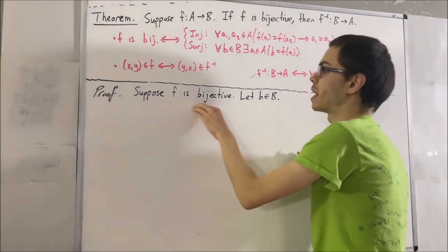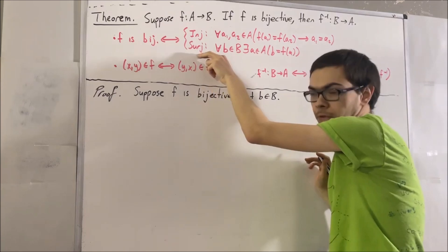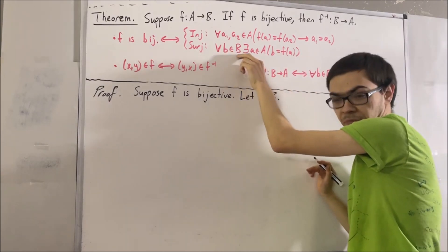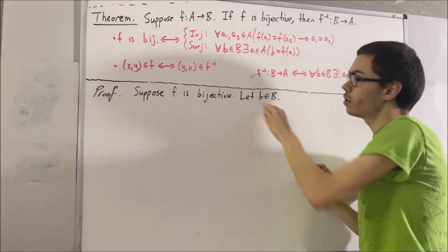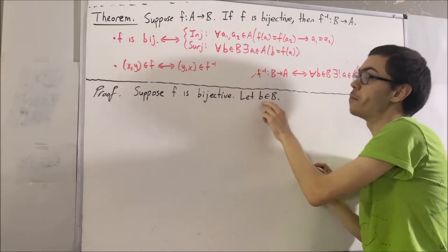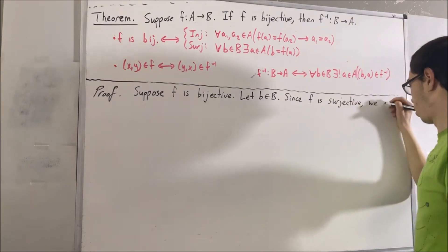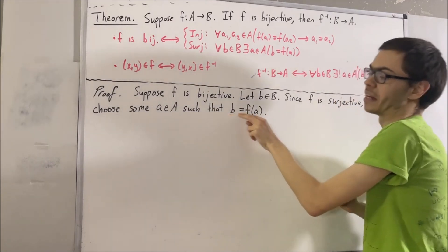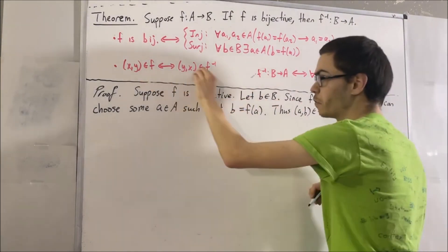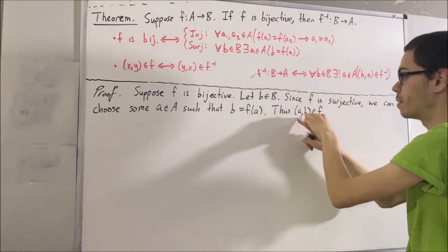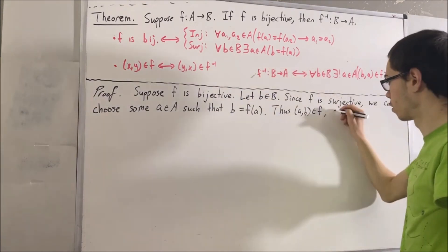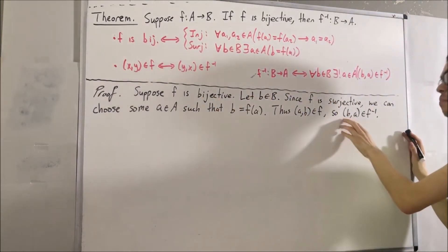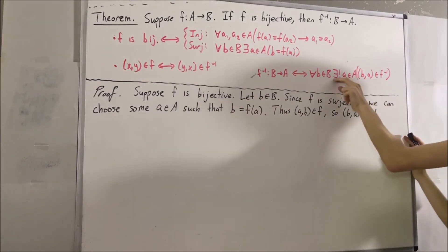Now, because f is bijective, we know one of the things that means is that f is surjective, which means we know for a fact that for every element in B there exists an element a in A with b = f(a). This works for the b we have in our proof. So we can choose some element a in A such that b equals f(a). We know that this is equivalent to saying that (a, b) is an element of f, and from inverses of relations, we know that this is equivalent to (b, a) being an element of f⁻¹. At this point, we have found an element a in A such that (b, a) is an element of f⁻¹. So this proves existence.